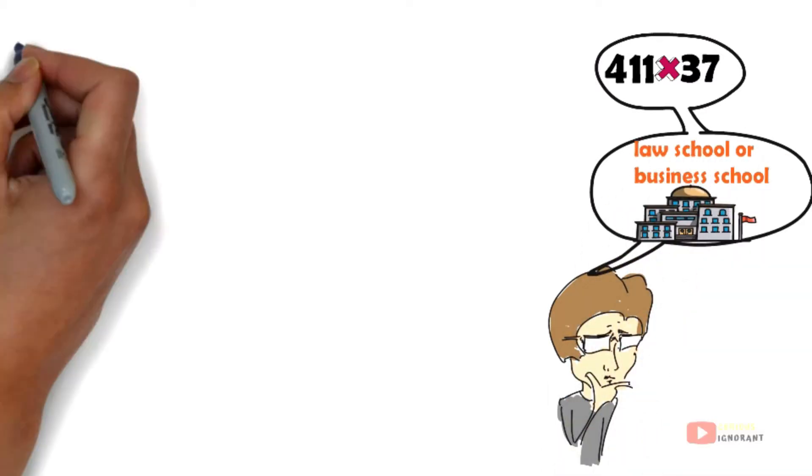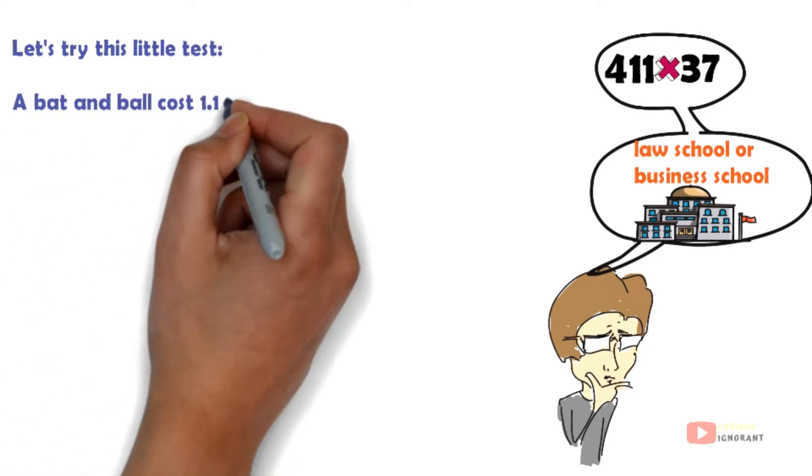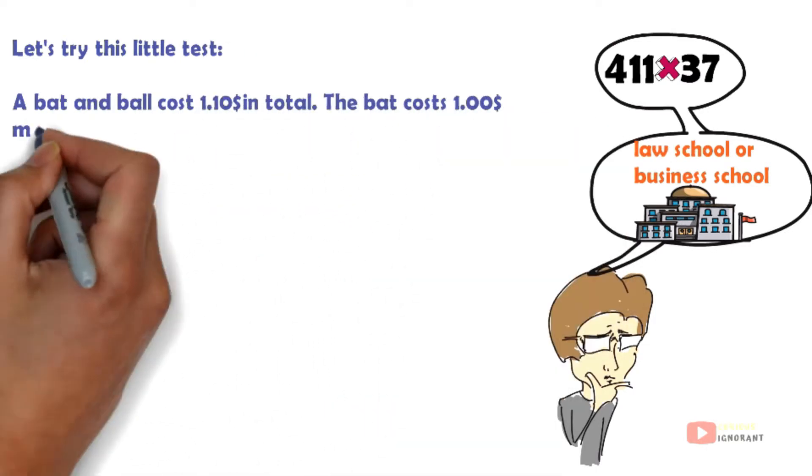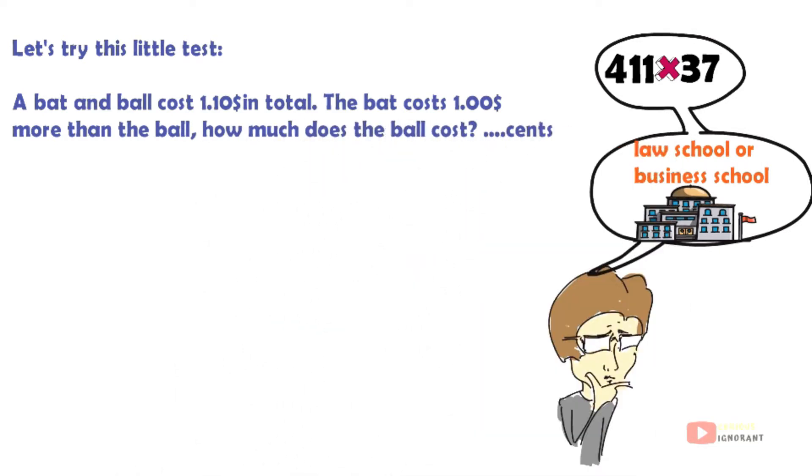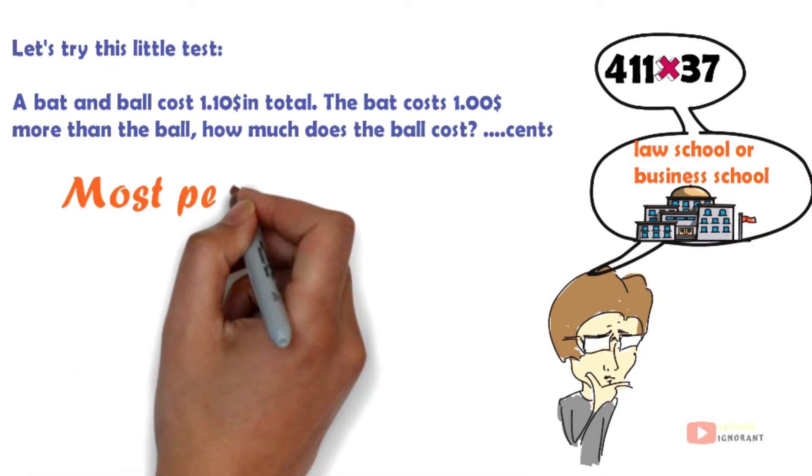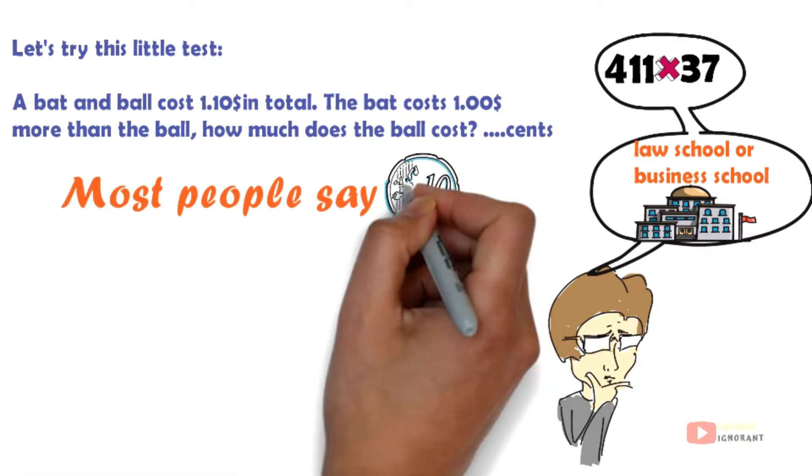Let's try this little test. A bat and ball cost $1.10 in total. The bat costs $1 more than the ball. How much does the ball cost? What is your first answer? Most people say $0.10 because of using an automatic system.